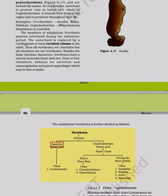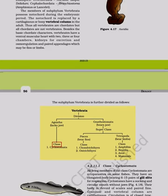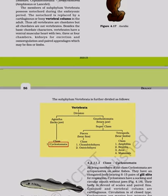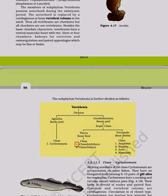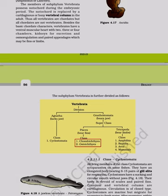Subphylum Vertebrata is further divided into: Agnatha (jawless) — Class Cyclostomata; and Gnathostomata (jawed) — Superclass Pisces (Classes Chondrichthyes and Osteichthyes) bearing fins, and Tetrapoda bearing limbs — Classes Amphibia, Reptilia, Aves, and Mammalia.